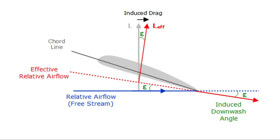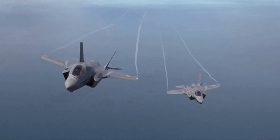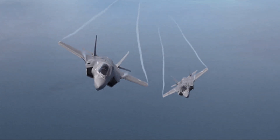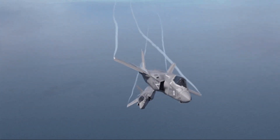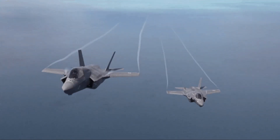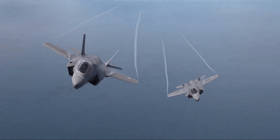So the consequence of wingtip vortices is to create extra drag on the airplane, known as induced drag. I hope this clears the concepts of wingtip vortices, downwash, and induced drag.